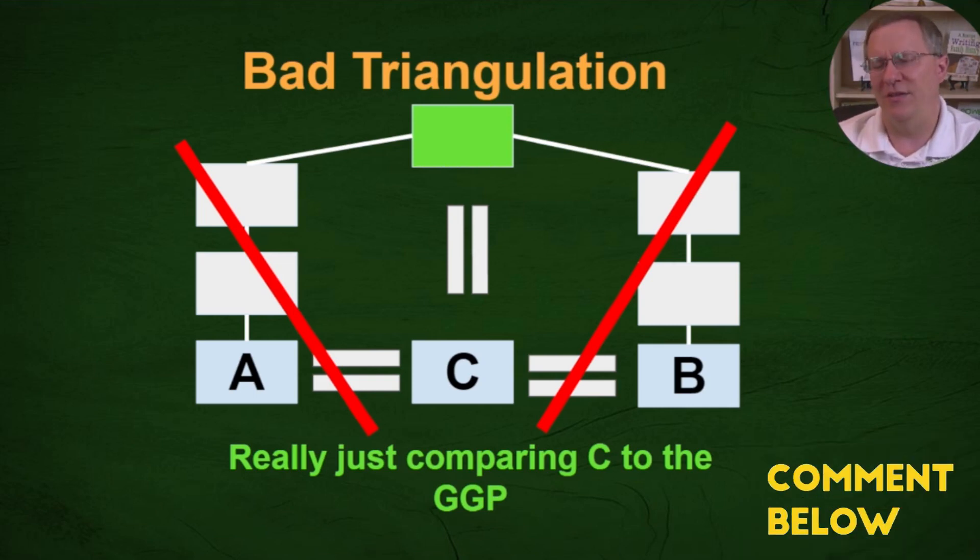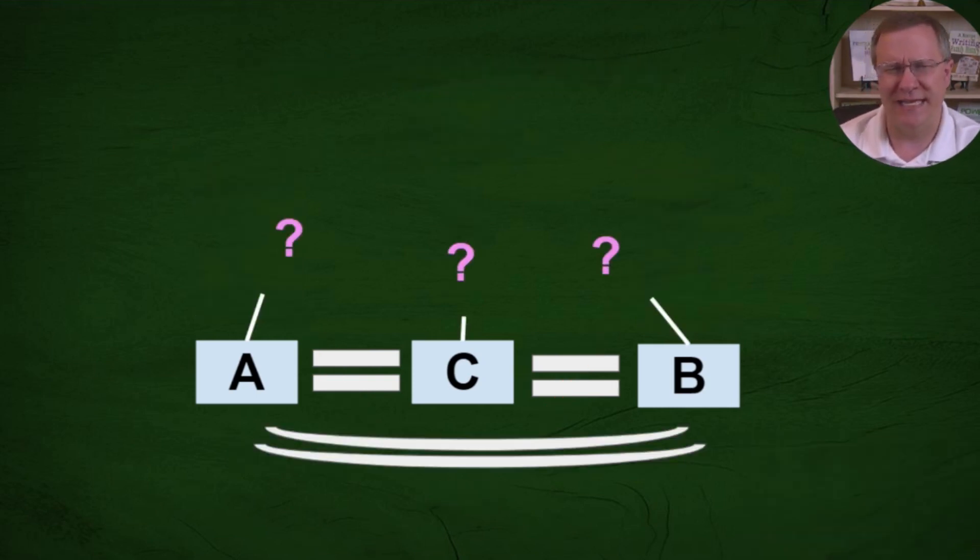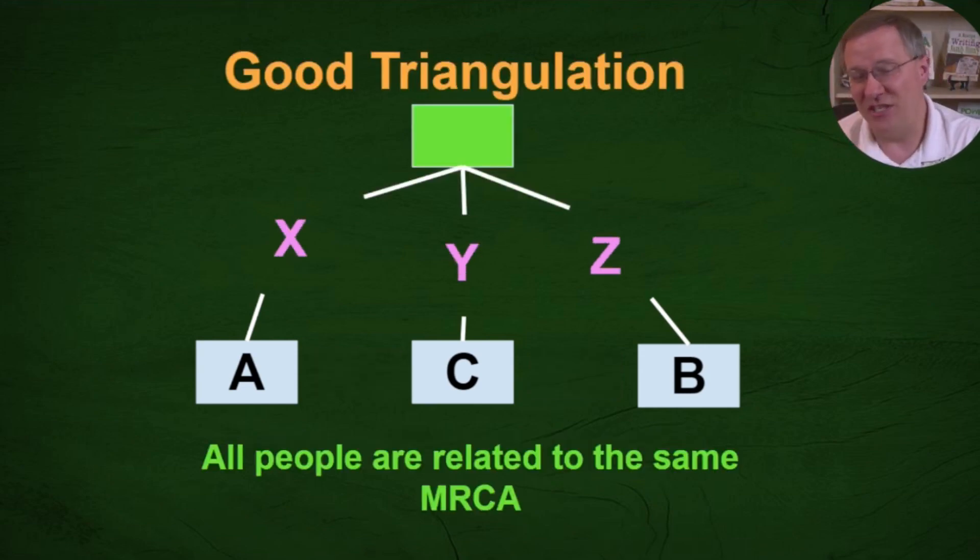So what would good triangulation look like? Well let's take an example here. We have three people and we don't know how they're related. A, B, and C and you can see that A, B, and C are all sharing a segment with each other. So they have the same part of DNA on the same chromosome that they all share together which indicates that they share a common ancestor. Well in this case I would actually call this good triangulation because if we went and did the research we would find that all three of them can trace this back to a single most recent common ancestor.